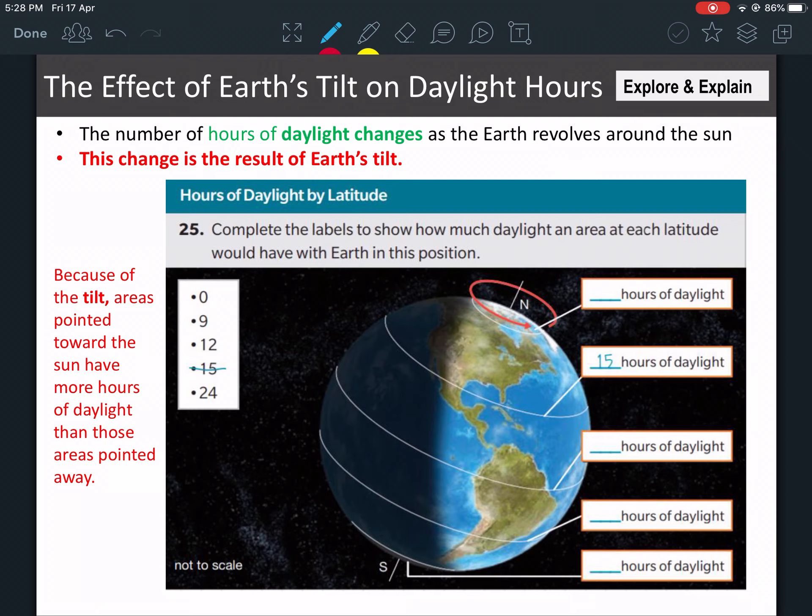Let's look at this exercise that will explain more what we were talking about. So the number of hours of daylight changes as the Earth revolves around the Sun. This change is the result of the Earth's tilt. لأن الأرض is tilted في عنا أوقات النهار تختلف, the number of hours during the day becomes different. Let's look at this, for example. They told you to complete this. Let's read that before. Because of the tilt, areas pointed toward the Sun have more hours than those pointed away from the Sun.